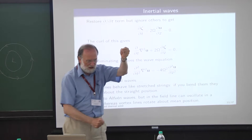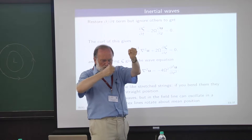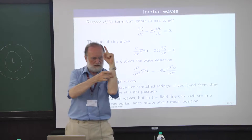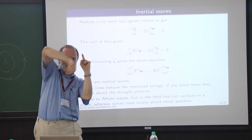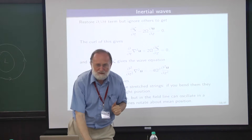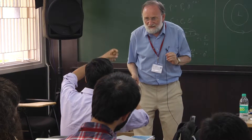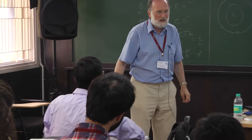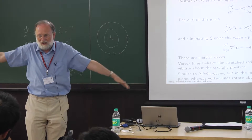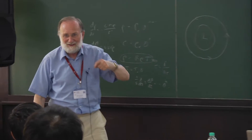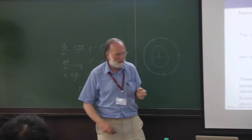When you pull vortex lines sideways, they get stretched and want to bounce back — but not quite like Alfvén waves. An Alfvén wave goes straight backwards and forwards, but a vortex line goes round and round rather than back and forth. That's the subtle difference between an inertial wave and an Alfvén wave. For rotation, it's like the ice skater: stretching it out decreases rotation locally, increasing angular momentum, so you spin faster. The Coriolis force in a rotating fluid is what conserves angular momentum.